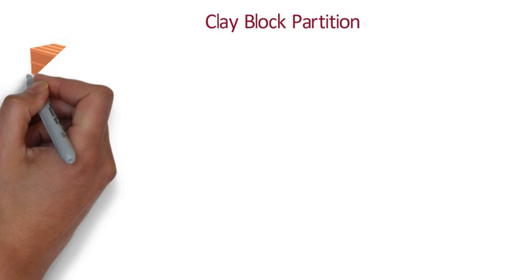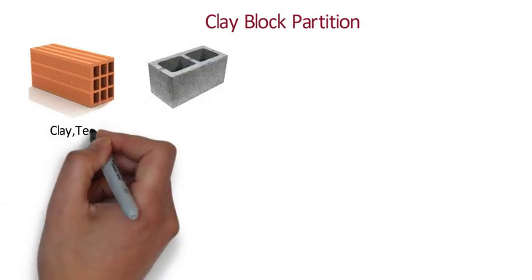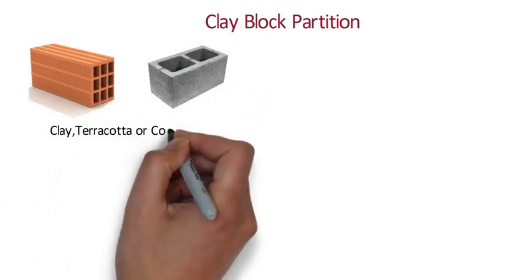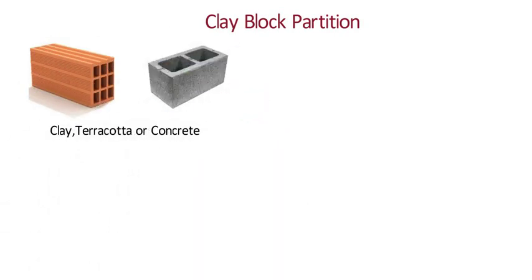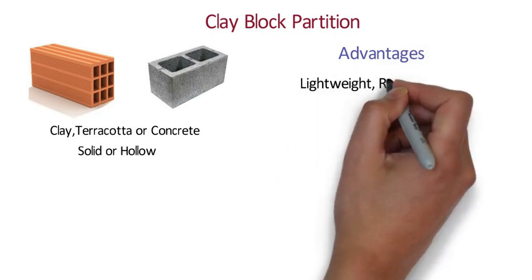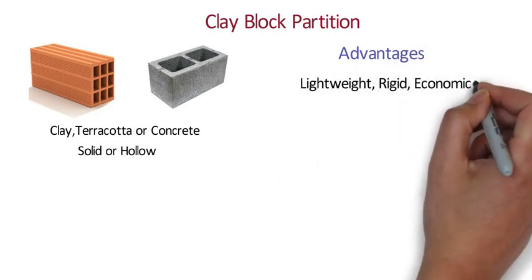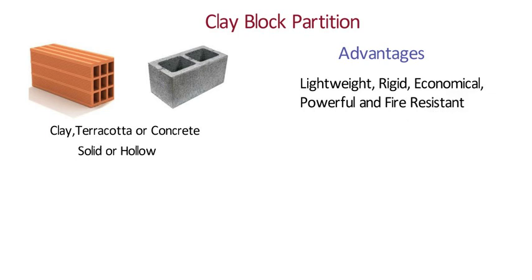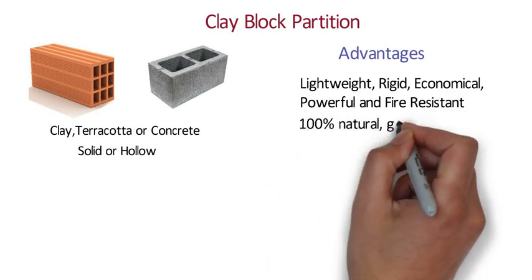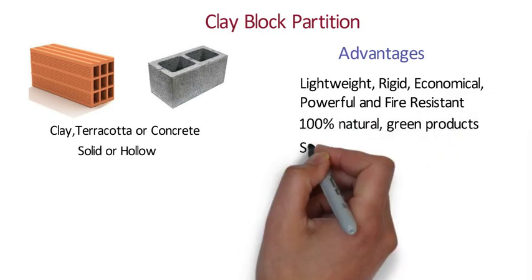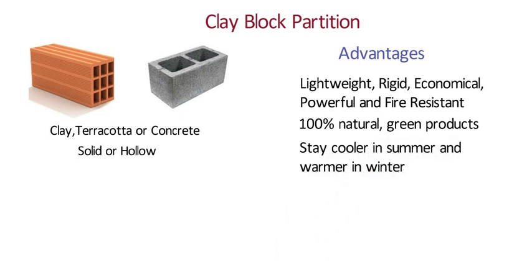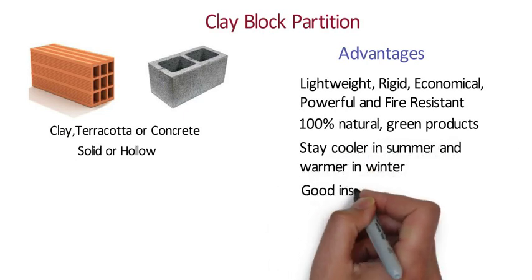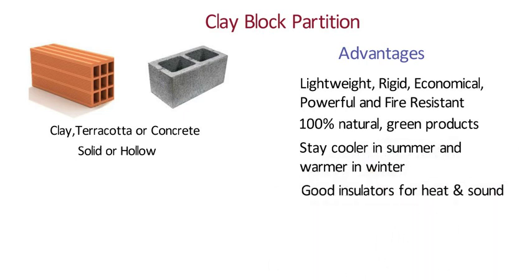Clay Block Partition: Hollow blocks made of clay, terracotta or concrete are generally used for the construction of partition walls. They can be either solid or hollow. The advantages of clay block partitions are they are lightweight, rigid, economical, powerful and fire resistant. They are 100% natural green products. These homes stay cooler in summer and warmer in winter. They are good insulators for heat and sound.